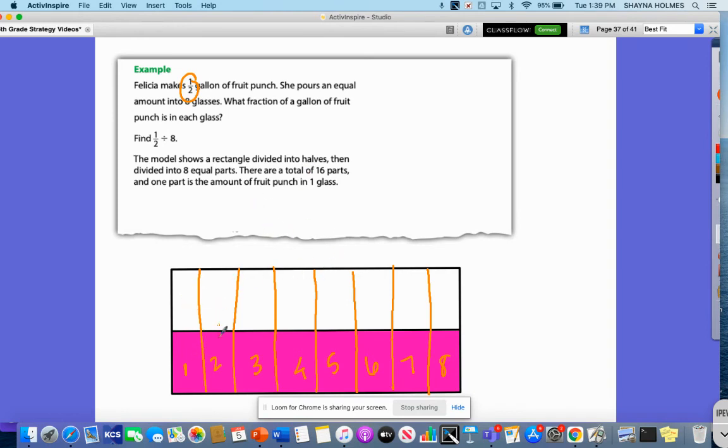So I actually have one, two, three, four, five, six, seven, eight, nine, ten, eleven, twelve, thirteen, fourteen, fifteen, sixteen. So each glass would get one-sixteenth gallon of fruit punch.